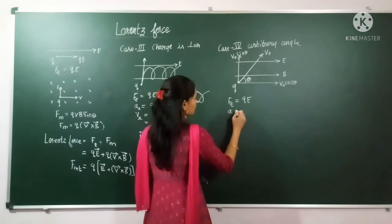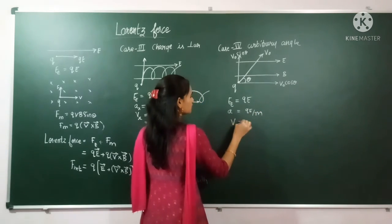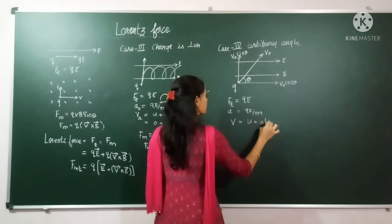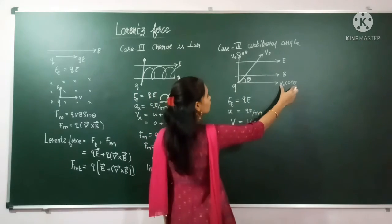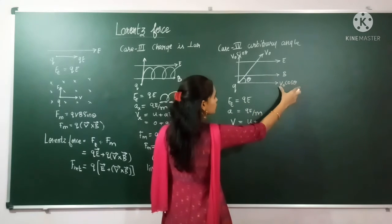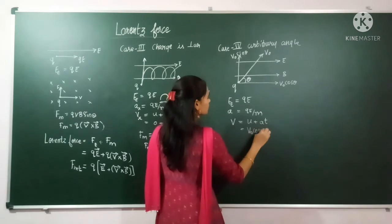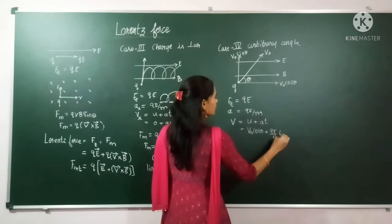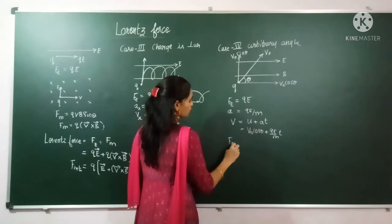The electric force is qE and acceleration is qE/M. For velocity, v = u + at, where the initial velocity in the direction of the electric field is the parallel component v₀ cos θ. So the velocity becomes v = v₀ cos θ + (qE/M) × t.